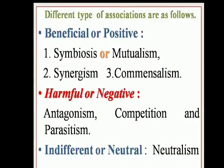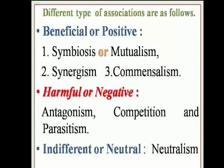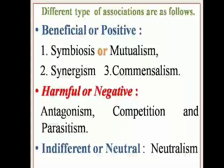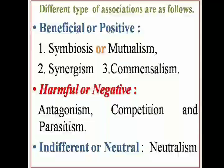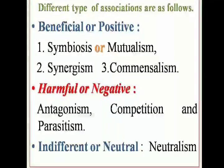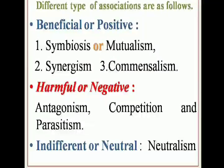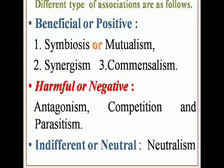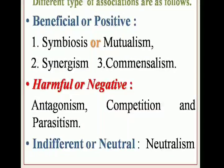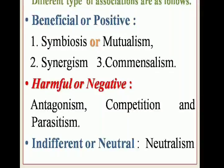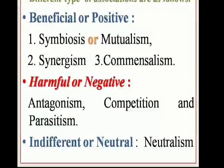There are different types of associations found in nature, such as Beneficial or Positive association, which has three types: Symbiosis, Mutualism, and Commensalism. The second type is Harmful or Negative association, divided into three types: Antagonism, Competition, and Parasitism. The third association is Neutral, that is Neutralism.